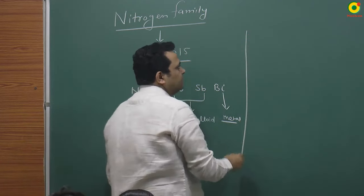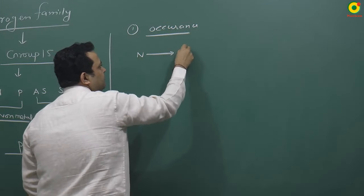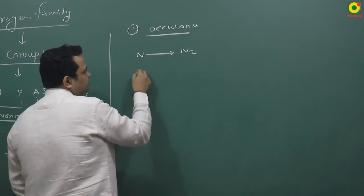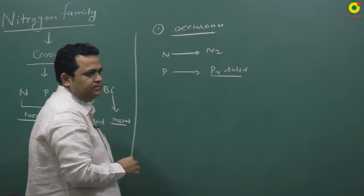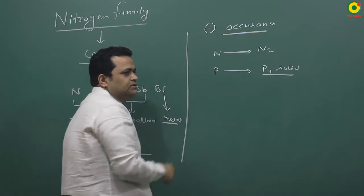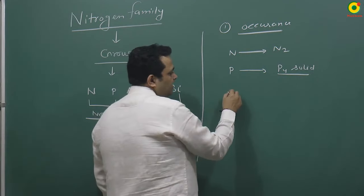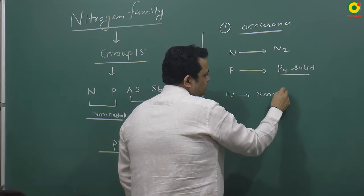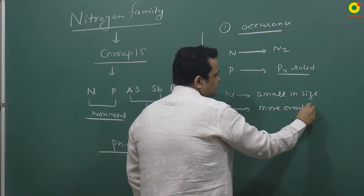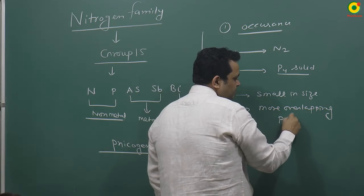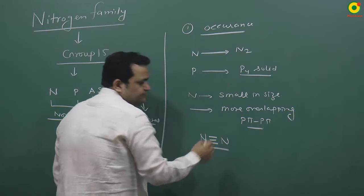First point: occurrence. Nitrogen occurs in the atmosphere in N2 form, and phosphorus occurs in P4 solid form. The first element is in gas state and the second is in solid state. Nitrogen has different properties because nitrogen is small in size - because of its small size, it can do more overlapping, specifically pi-pi overlapping.